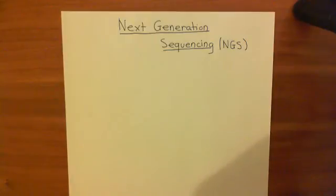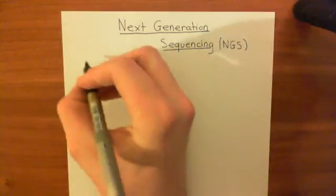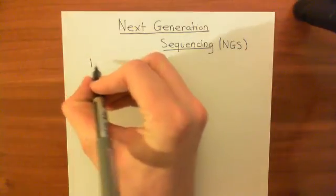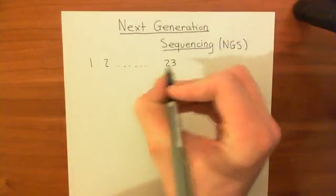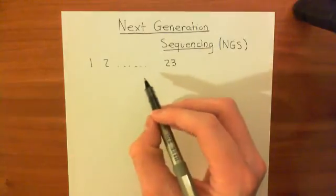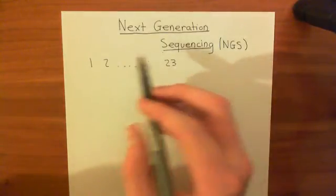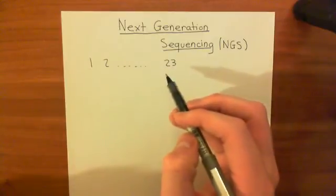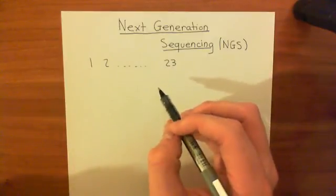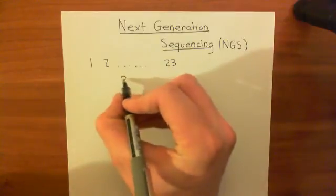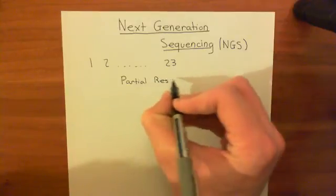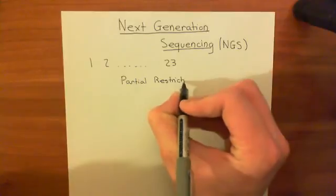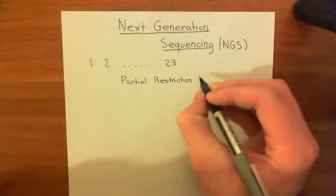Instead, you still have to fragment up your genome and produce lots of different fragments. You take your 23 chromosomes — chromosome 1, 2, all the way up to chromosome 23 — you take multiple copies of them, and you fragment these multiple copies into different pieces using a partial restriction digest.